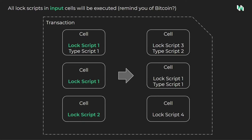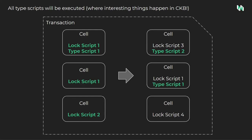When a transaction is submitted, these scripts will execute in a specific order. First, the lock scripts will execute on all input cells. This ensures that proper authority was supplied to every input. Lock scripts validate authority, therefore they only need to run on the inputs, but not the outputs. Next, the TypeScripts will execute on all input and output cells. The TypeScript is optional, so it only executes where it is present.